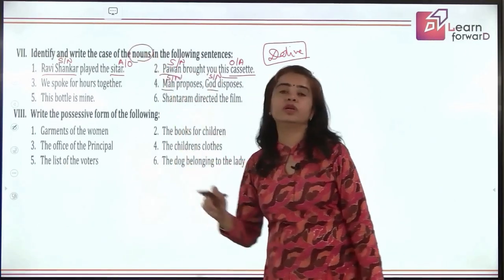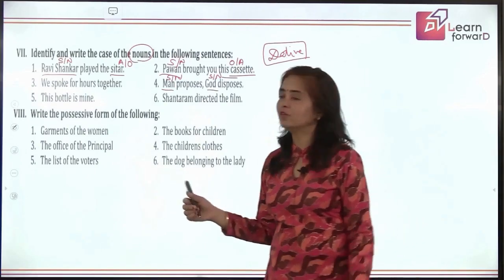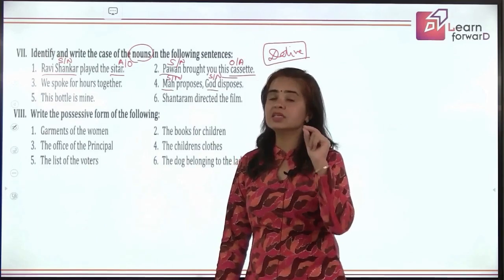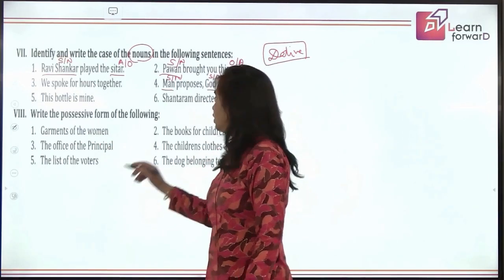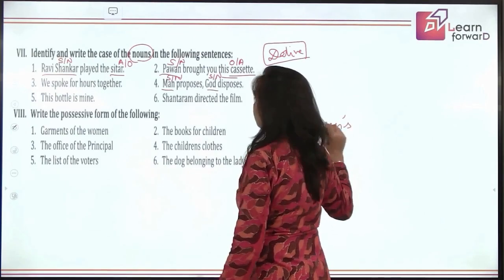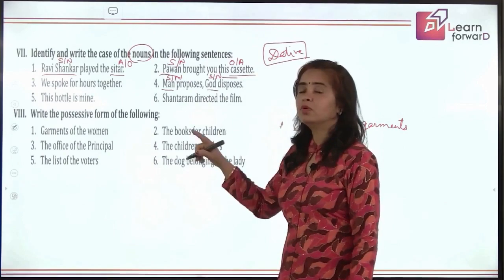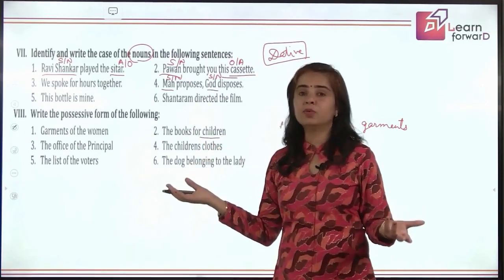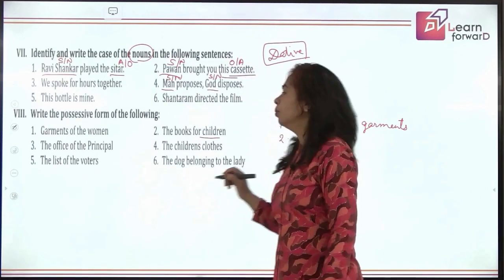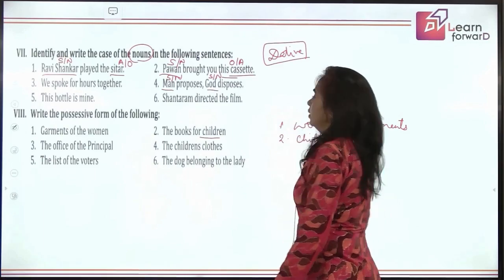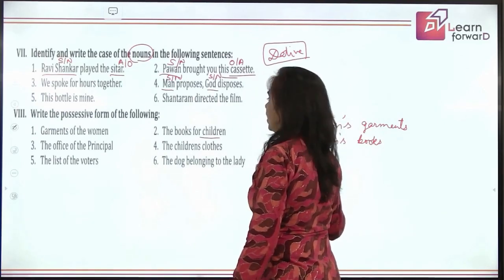Now let's write the possessive form of the following. 'Garments of the women' — reason it out: 'women' is plural but does not end in 's', so we add apostrophe-s: 'women's garments'. 'Books for children' — again, 'children' is plural without 's' at the end, so it becomes 'children's books'. 'The office of the principal' — 'principal' is singular with no 's' ending, so it becomes 'the principal's office'.